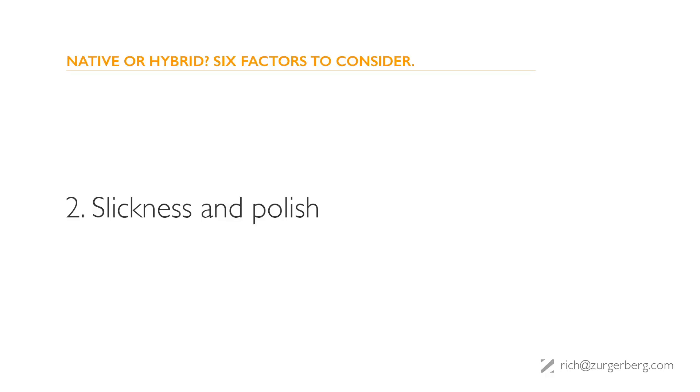Factor two: slickness and polish. As a general rule, hybrid frameworks are slower and less polished than native apps. These differences can be subtle with simple apps and obvious with complex apps. At a certain point, you just have to go native. If the heart of your app is giving users a fairly simple tool and polish isn't a primary concern, then hybrid is okay here.